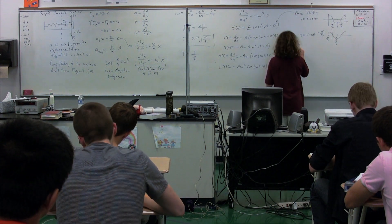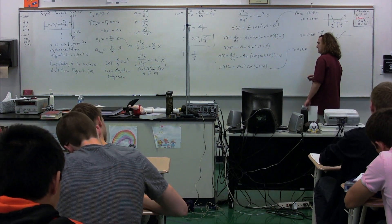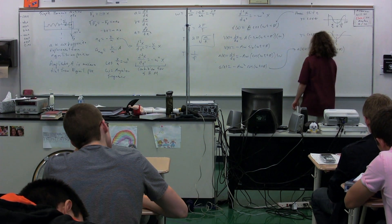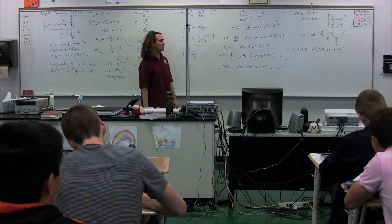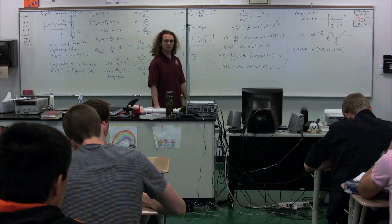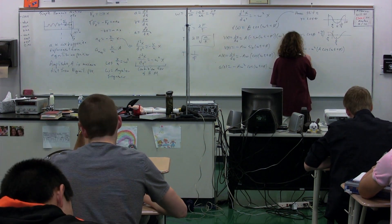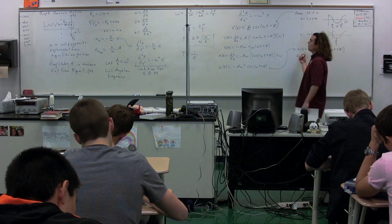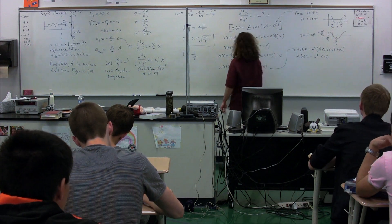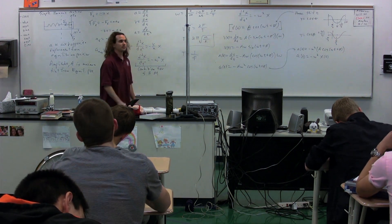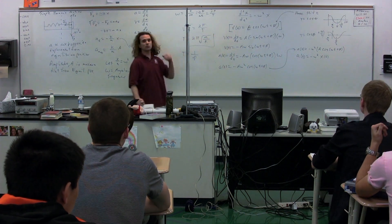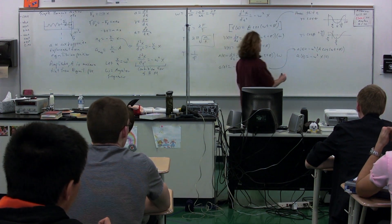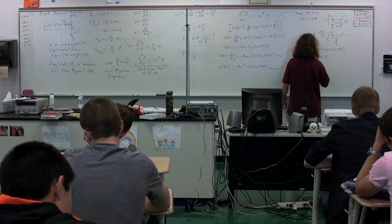The acceleration as a function of time equals negative omega squared multiplied by A cosine(omega t + phi). Since A cosine(omega t + phi) is just x(t), the acceleration as a function of time equals negative omega squared times x. This confirms that the position equation x(t) = A cos(omega t + phi) satisfies the condition for simple harmonic motion. You can also use sine — it doesn't really matter.